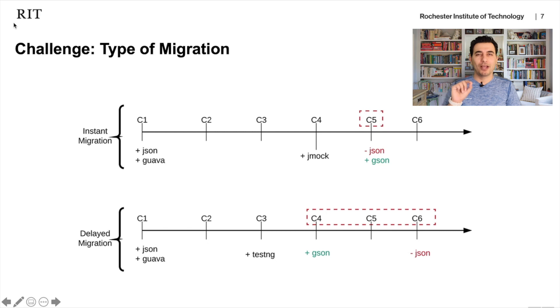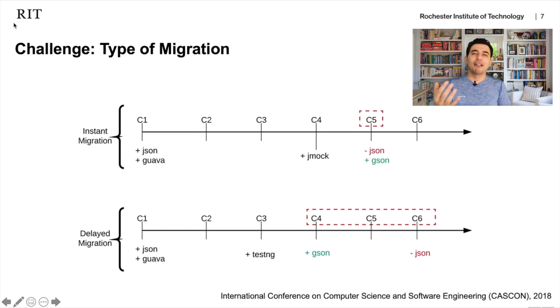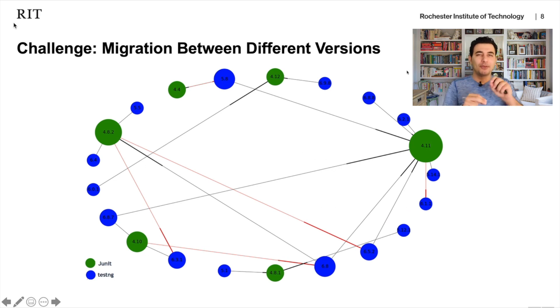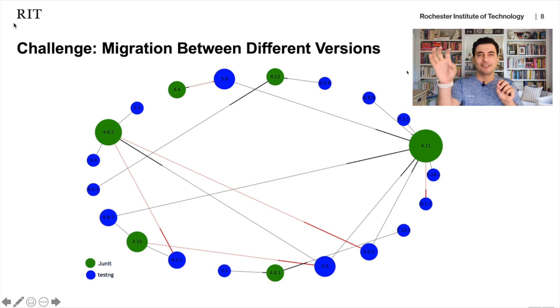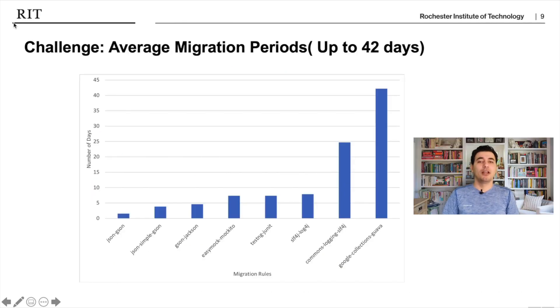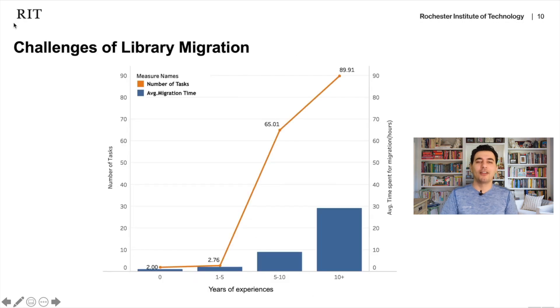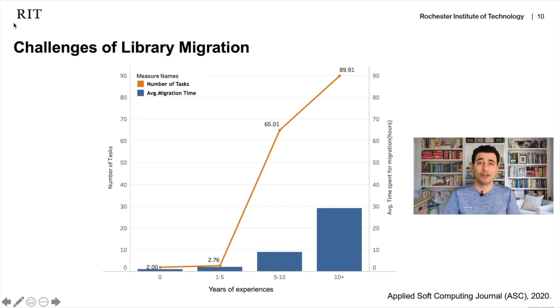There is existing research studying the challenges of library migration. One study shows that migration doesn't happen in a single commit — it could happen across multiple commits, called delayed migration. Another study shows migration can happen between different versions, not necessarily sequential ones. Another study shows the migration process can take up to 42 days for a developer to complete. Another study shows that migration is mostly done by developers with high experience, because companies don't want to break their code and want to reduce the possibility of regression.